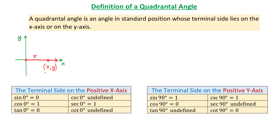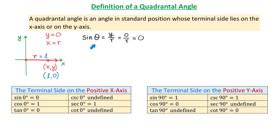To define the six trigonometric functions, we need to understand that the y-coordinate of this point is 0 and x is the same as r. For example, if this point has the coordinates (1, 0), then r equals 1. So for a quadrantal angle whose terminal side is on the positive x-axis, y = 0 and x = r. To define sine of this angle θ: by definition sine is y/r, and because y is 0, we get 0/r = 0. So sine of 0° is 0.